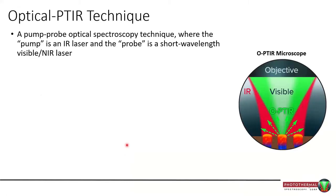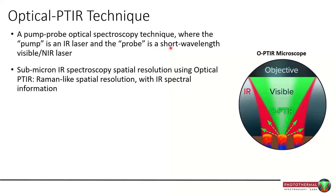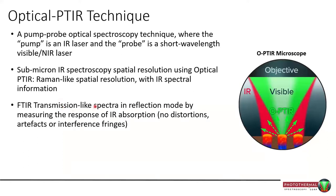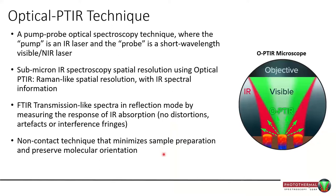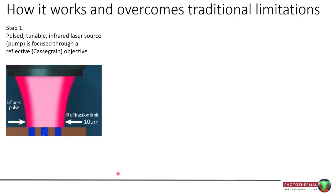Enter the OPTIR technique. It is a pump-probe optical spectroscopy technique where the pump is an infrared laser to excite the sample and the probe is a short-wavelength laser to probe the sample. It delivers submicron microscopy — very much like a Raman microscope — but delivers the infrared richness of infrared spectroscopy. Spectra are very much like regular FTIR transmission spectra but delivered in reflection mode without distortions, artifacts, or interference fringes. It is non-contact, far-field, and spatially resolution is wavelength independent.